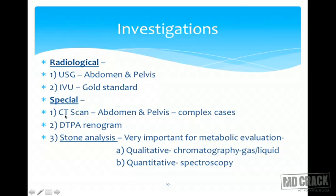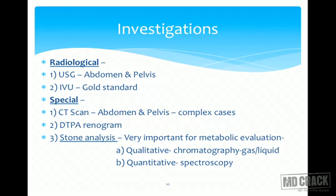CT scan of the abdomen and pelvis is a special study that virtually replaces IVU but is reserved for complex cases when straightforward IVU is not helpful. A DTPA renogram is used for patients with urosepsis or renal failure, to delineate kidney function and determine how much kidney can be preserved, or whether a non-functioning kidney needs to be removed.